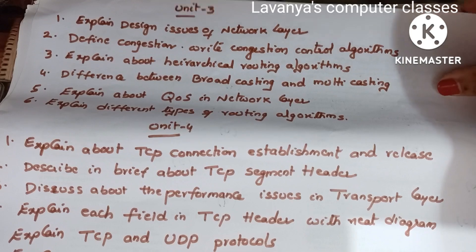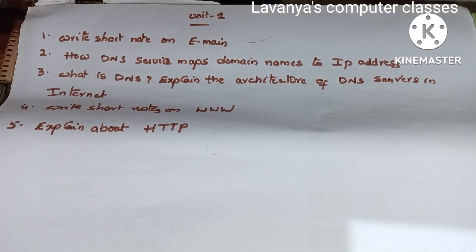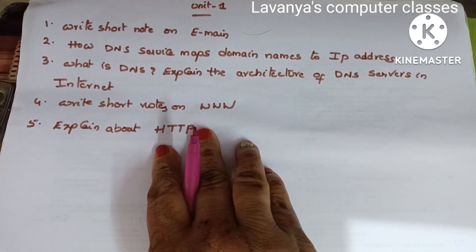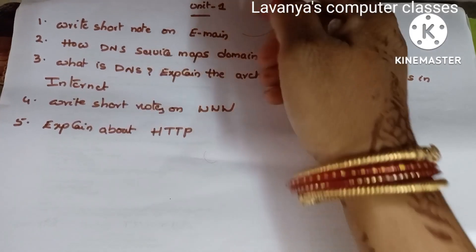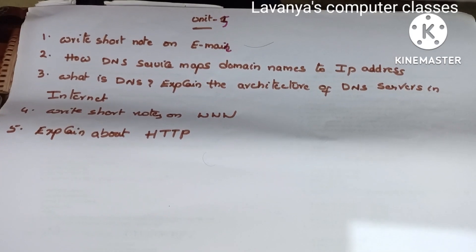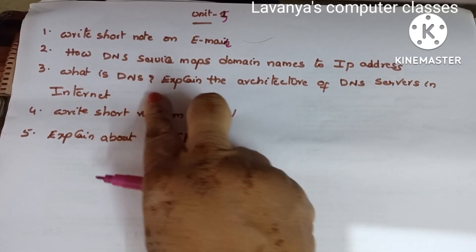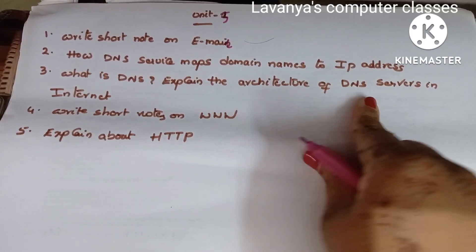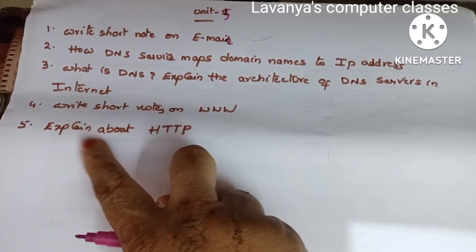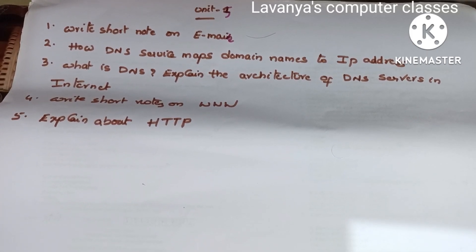Explain TCP and UDP protocols, and explain transport services and elements of transport protocols. Read all questions from units three and four — don't leave any, as they selected very few questions from these units. Unit 5 questions: write short notes on email. Explain DNS — how the DNS service maps domain names to IP addresses and the architecture of DNS servers. Also write short notes on WWW and explain HTTP.